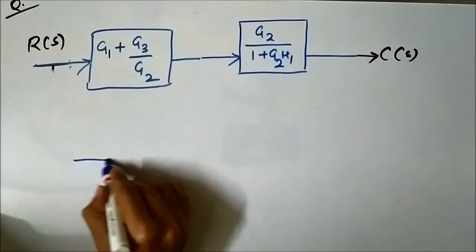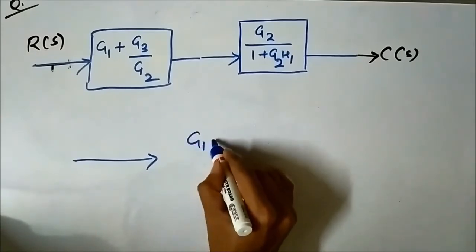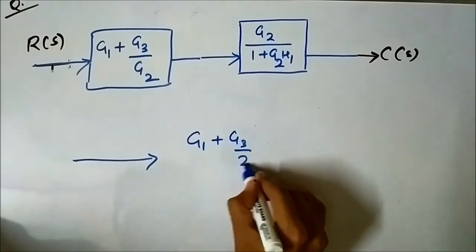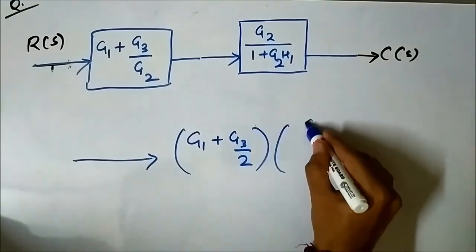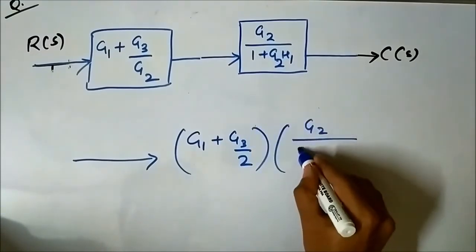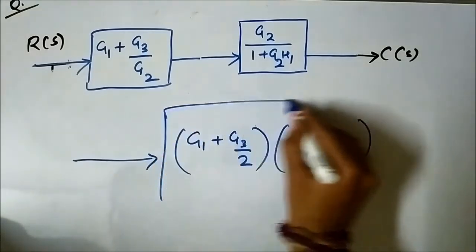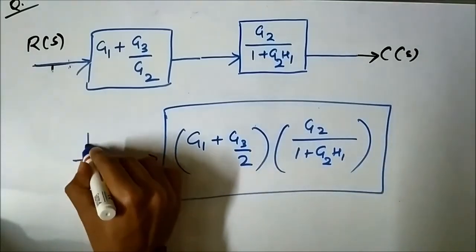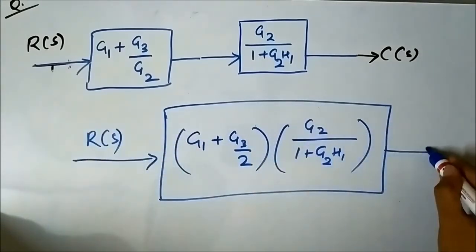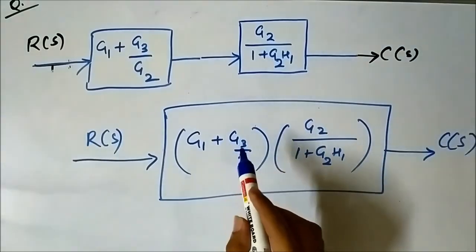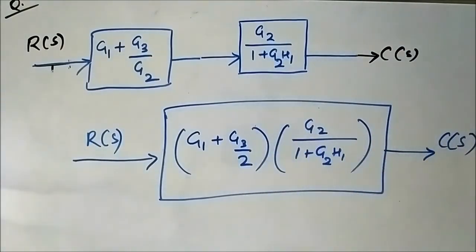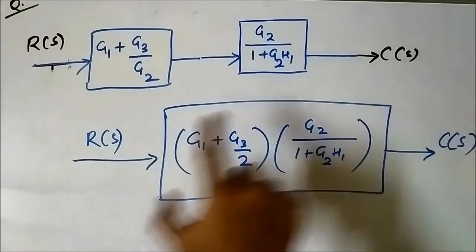The net output will be (g1 plus g3/g2) multiplied by g2 by 1 plus g2·h1. This is R(s) input and C(s) output, so C(s)/R(s) equals (g1 plus g3/g2) into g2 by 1 plus g2·h1. We have converted the entire block diagram into this simple transfer function form.